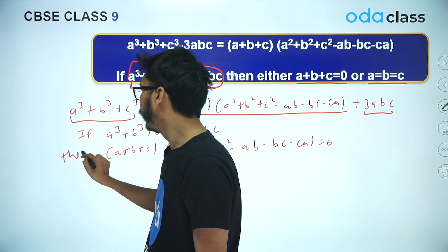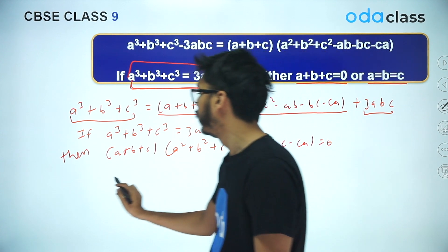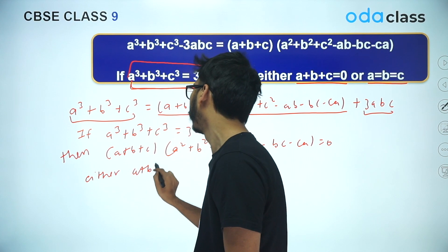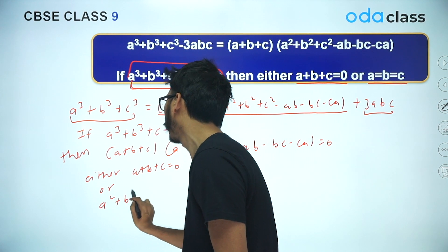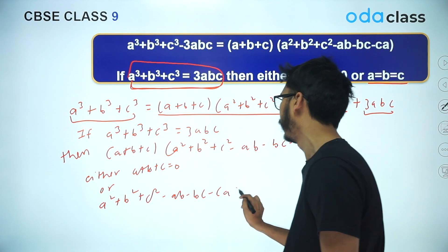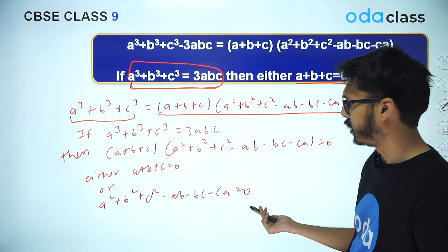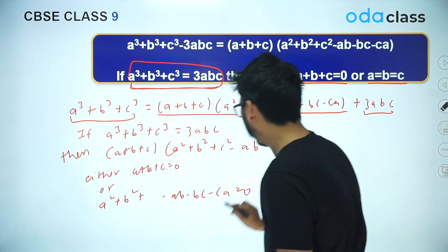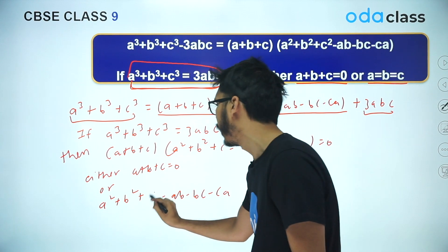If the product of two quantities is zero, then either the first quantity is zero or the second quantity is zero. So from here you get either a + b + c = 0, or a² + b² + c² − ab − bc − ca = 0. This second result is a very fascinating result because from here you can make a perfect square, and once you make a perfect square you get the result a = b = c. Let me show you how that result comes.